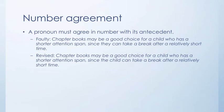Number agreement: a pronoun must agree in number with its antecedent. Faulty example: Chapter books may be a good choice for a child who has a shorter attention span since they can take a break after a relatively short time. They should be singular because it should refer back to a child, but because it's plural it refers back to chapter books instead. Revised: Chapter books may be a good choice for a child who has a shorter attention span since the child can take a break after a relatively short time.